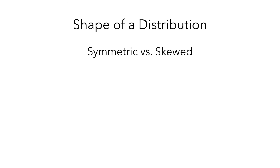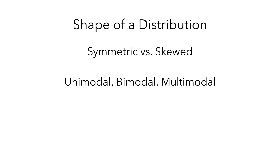In this video, we've looked at describing the shape of a distribution. In particular, we saw examples of distributions that were symmetric or skewed, unimodal, bimodal, and multimodal, and noticed outliers. Each of these terms tells us something about the population, and we'll build on all of these ideas in subsequent videos.